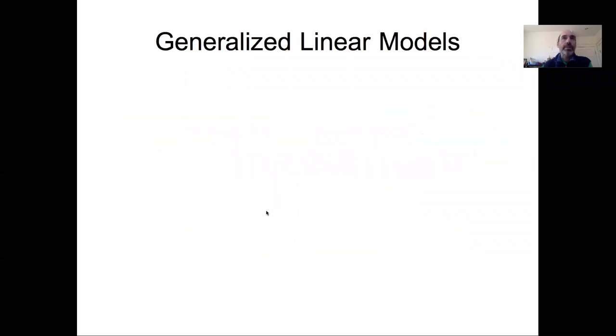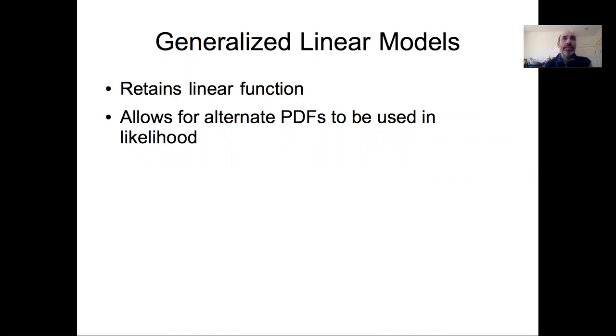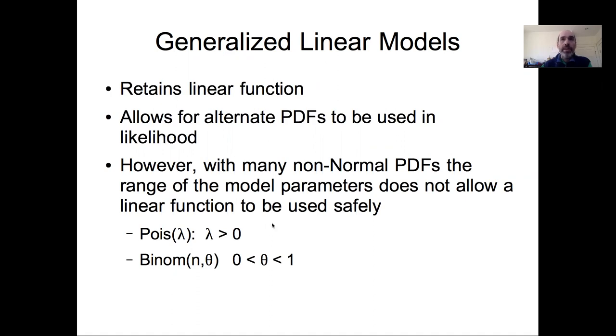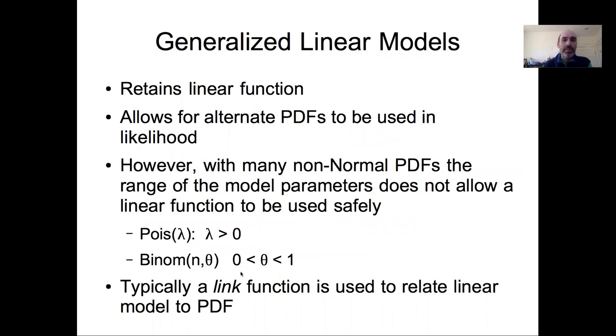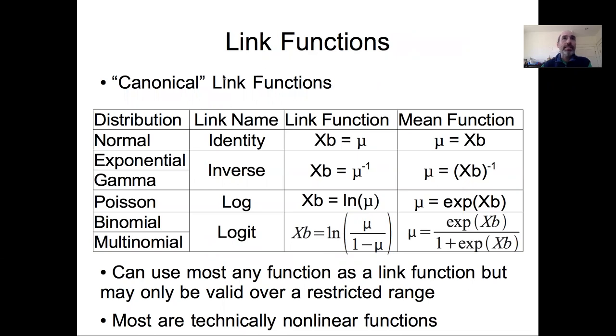The idea of a generalized linear model is that we want to retain our linear function under the hood as a way of relating our covariates to our response variable. We want to use alternative probability distributions in our likelihood. In doing so we need to account for the fact that many non-Gaussian PDFs have parameters that cannot range over the plus or minus infinity range that the mean of the normal can, but instead have range restrictions, such as the Poisson needing to be positive, the binomial needing to be between 0 and 1. The standard solution to this is to use link functions. And as we talked about in the last lecture, there's a number of link functions out there for different families of distributions.